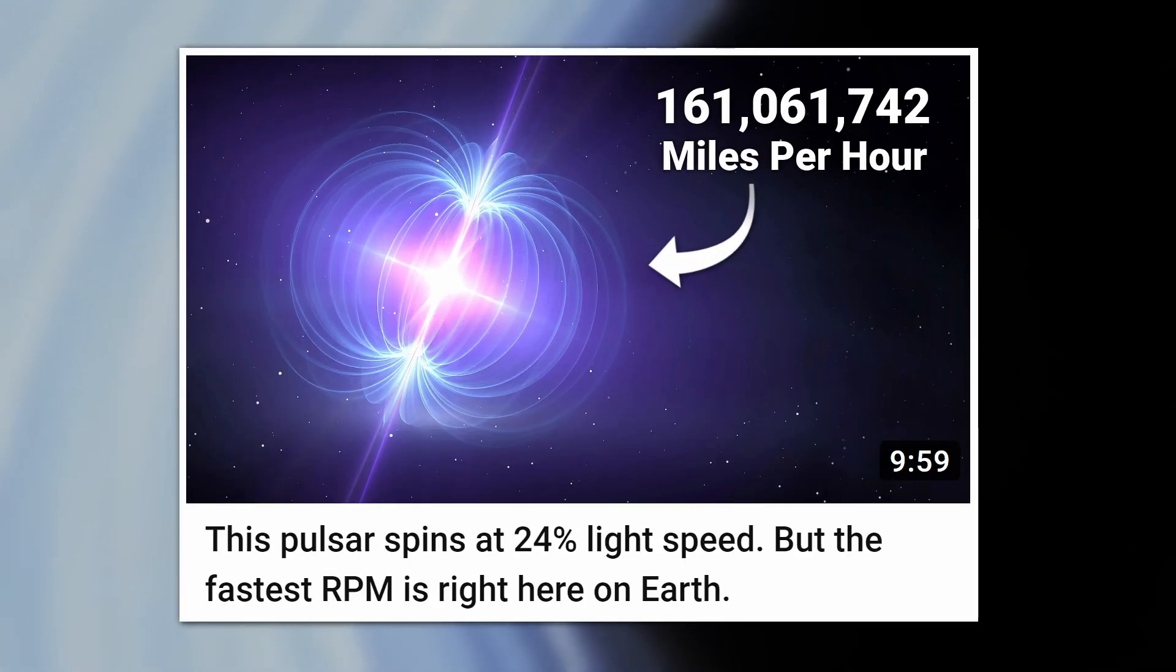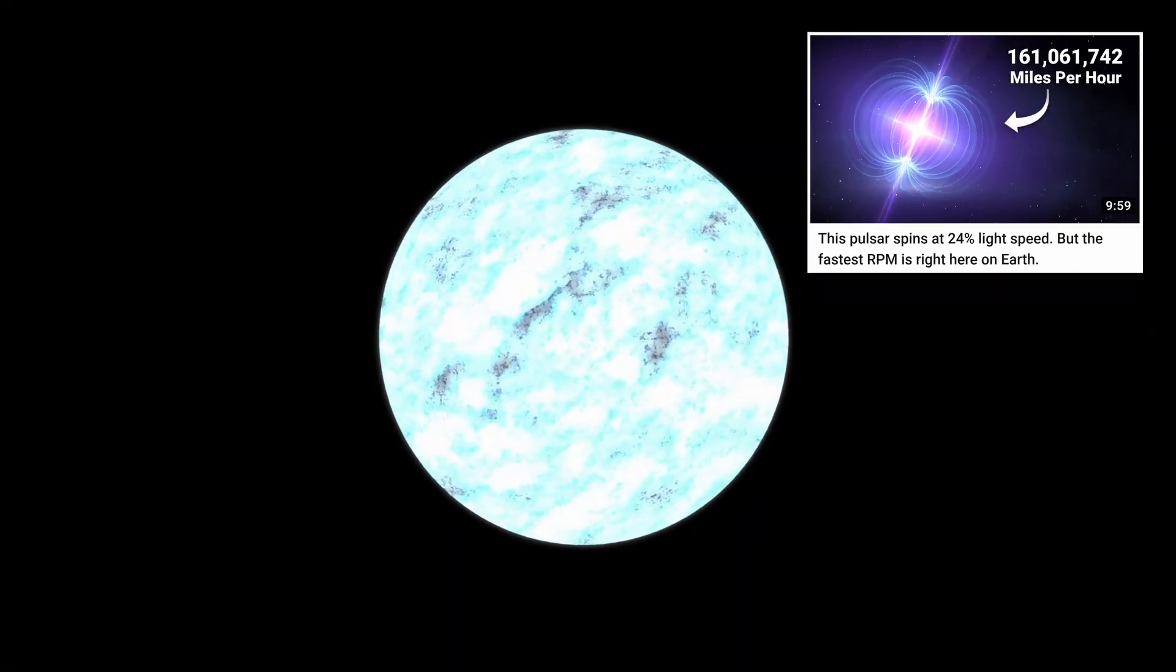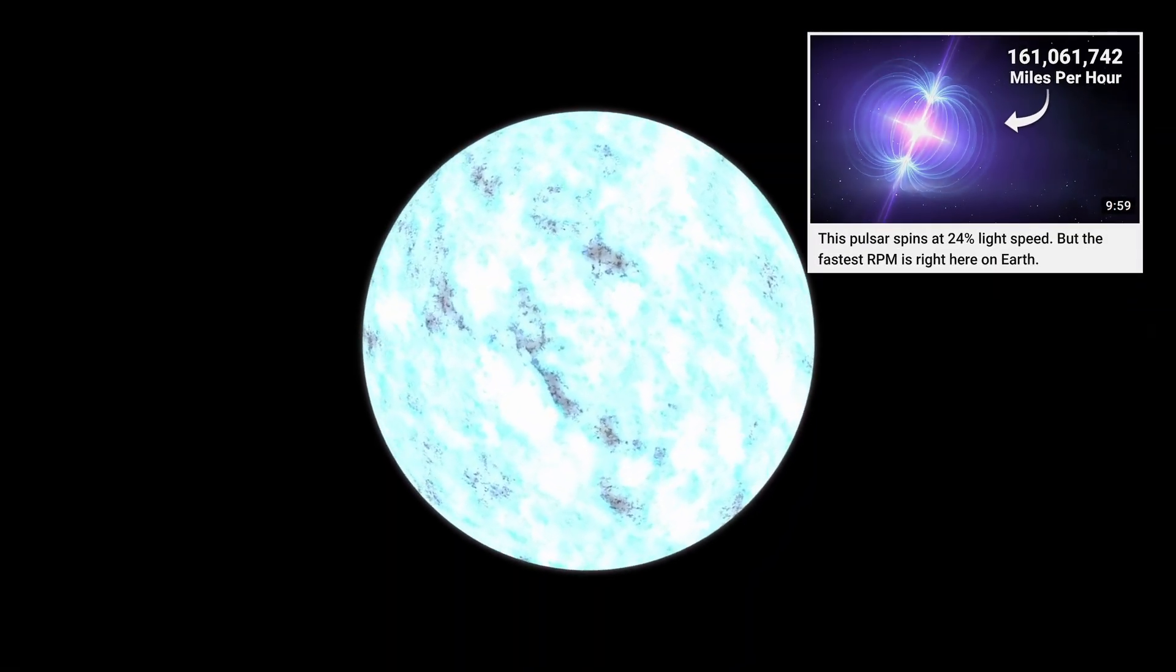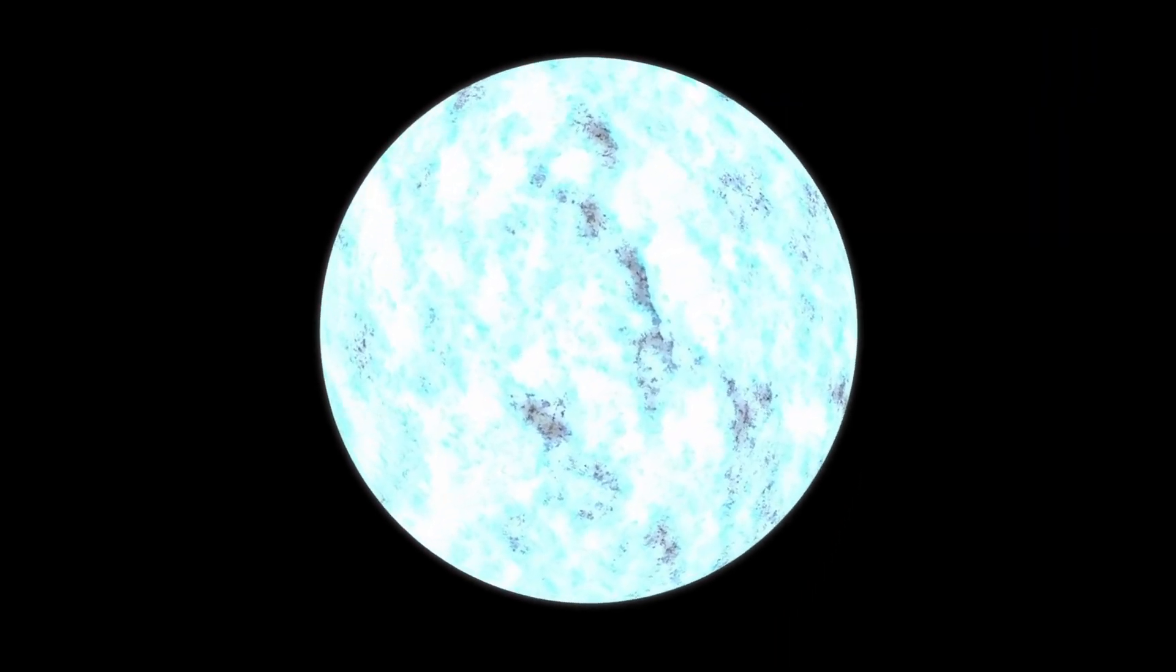In this video, we focused on a pulsar that spins at 24% the speed of light. That is exceptional in a completely different way, because it's an actual clump of mass spinning at that speed without tearing itself apart. That's a testament to the immense gravity of neutron stars.